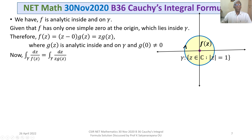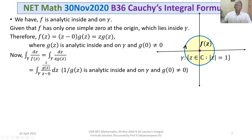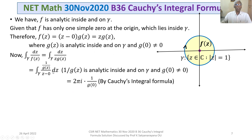Now let us take the integral around gamma of dZ by F(Z), which equals the integral around gamma of dZ by Z·g(Z), since f(Z) equals Z·g(Z). This can be rewritten as the integral around gamma of (1/g(Z)) divided by (Z minus 0), dZ. Notice that 1/g(Z) is analytic inside and on gamma, and g(0) is not equal to 0. Applying Cauchy's integral formula, we get 2πi times the value of 1/g(Z) at Z equals 0, that is 2πi times 1/g(0).